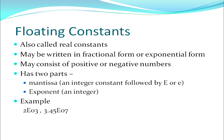Next we move on to floating constants. Floats are decimal numbers. Each float or real number has two parts: a fractional form and an exponential form. They can be positive or negative. The mantissa part is followed by a capital E or small e, while the exponent is an integer. For example, 2E03 means 2 is the mantissa part and 03 is the exponent part. Similarly, 3.45E07 means 3.45 is the mantissa and 07 is the exponent.